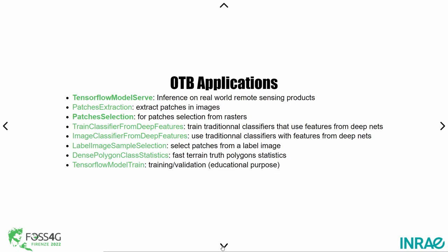The OTB applications include tools to extract patches from images, applications to select where you want to extract patches, and applications to process images with a model. There are also some experimental applications — for instance, you can use traditional classifiers that work on features of deep models, such as downloading a pre-trained ResNet and using a random forest on features from that network. Finally, there are helpers to extract polygon statistics.